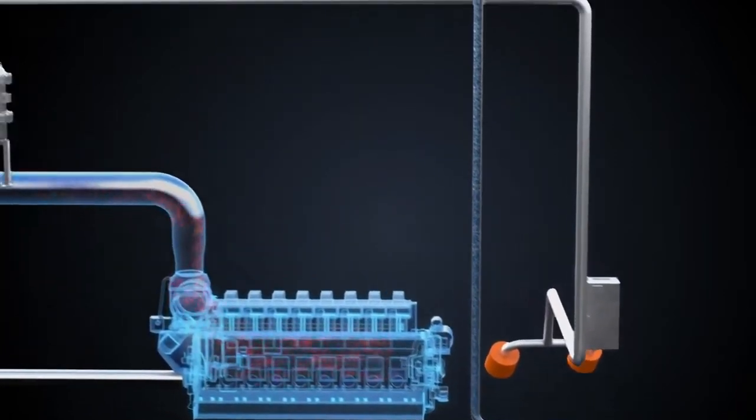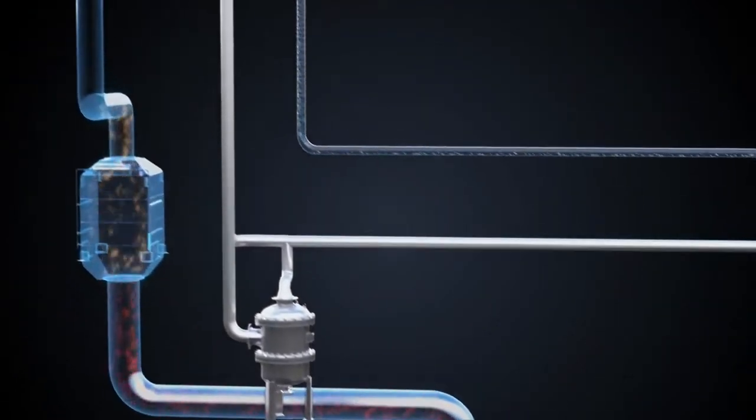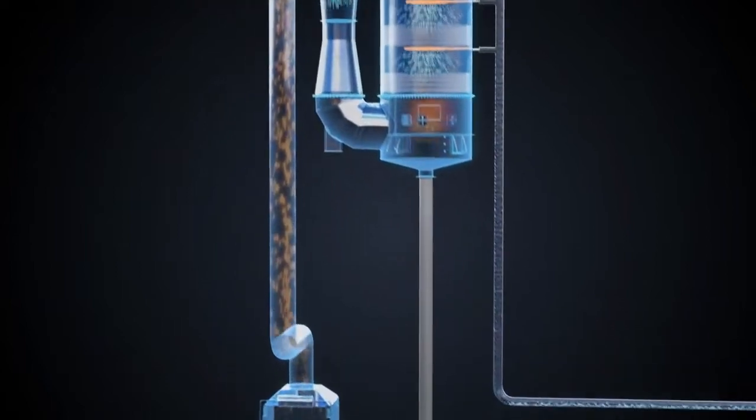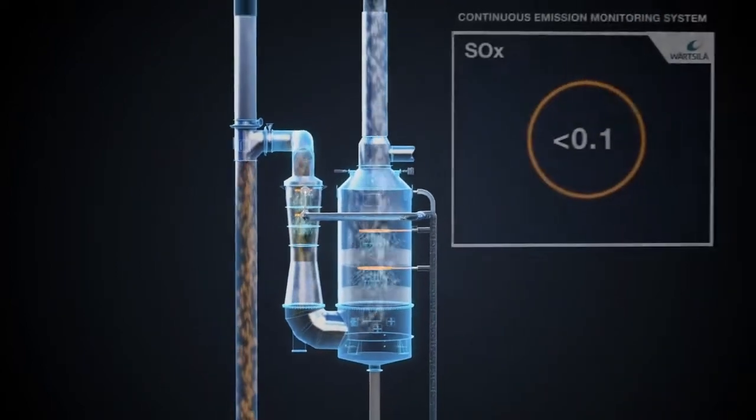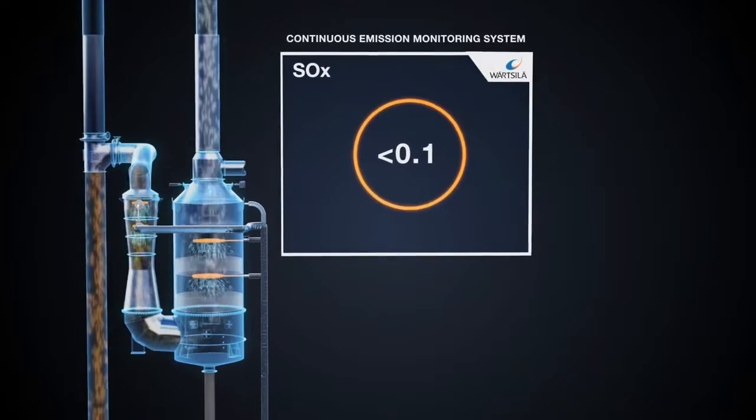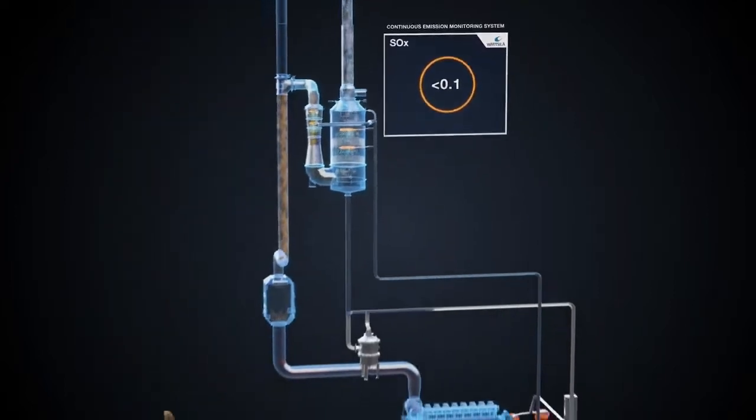The sulfur oxides in the exhaust gas react with added water and the cleaned exhaust is then released into the atmosphere through the stack. The release of exhaust is monitored and controlled by a continuous emission monitoring system.